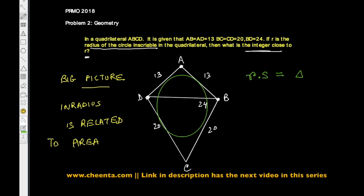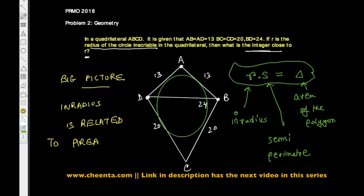Let me write this: R is the inradius, provided you can inscribe a circle. S is the semi-perimeter, and delta is the area of the polygon. This is a very powerful formula that you can remember. Semi-perimeter is basically you add the length of the sides and divide that sum by two.